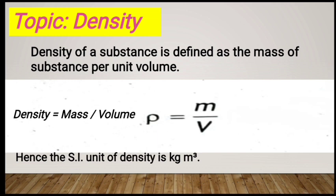For example, consider water — if water has a mass of 1 kg, its volume will be a certain amount. If mass increases, volume also increases proportionally. The unit of mass is kilogram, the unit of volume is meter cube, so the unit of density is kilogram per meter cube.